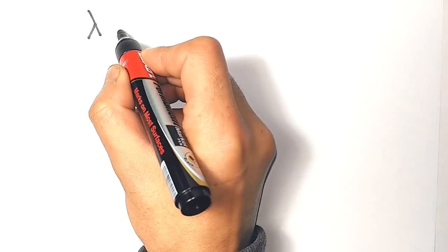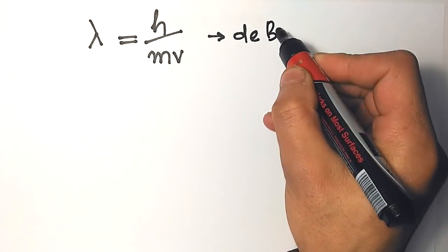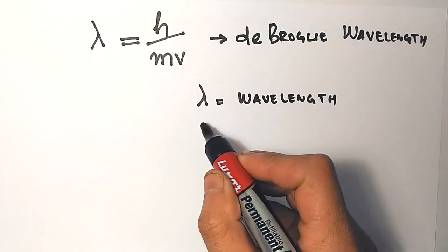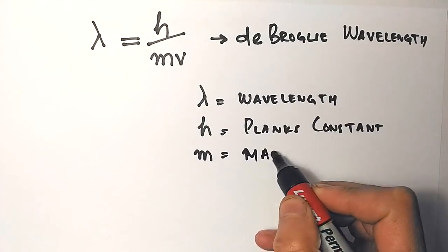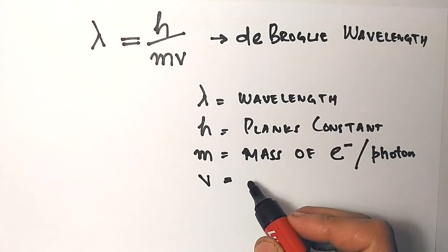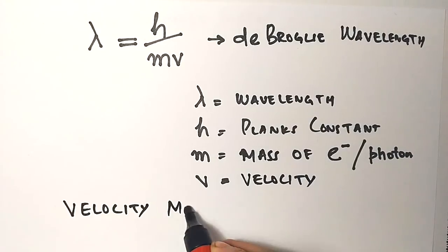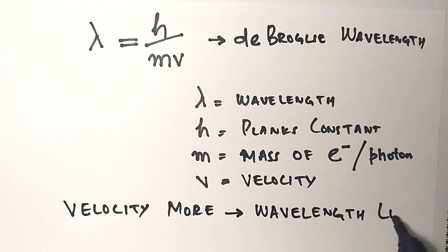According to de Broglie, lambda equals h over mv, where lambda is wavelength, h is Planck's constant, m is the mass of the electron or photon, and v is velocity. When the velocity of the electron is higher, the wavelength will be far less.